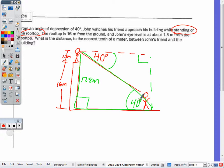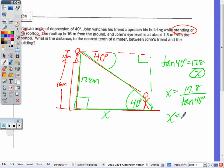What is the distance there, type of meter between John's friend and the building X? So I have opposite and adjacent. So it's gonna be the tangent of 40 degrees equals 17.8 over adjacent X. X is in the denominator. So that's equal to 17.8 divided by the tangent of 40 degrees. So let's get that decimal. We're rounding to the nearest tenth of a meter. So we got 21.2 meters.